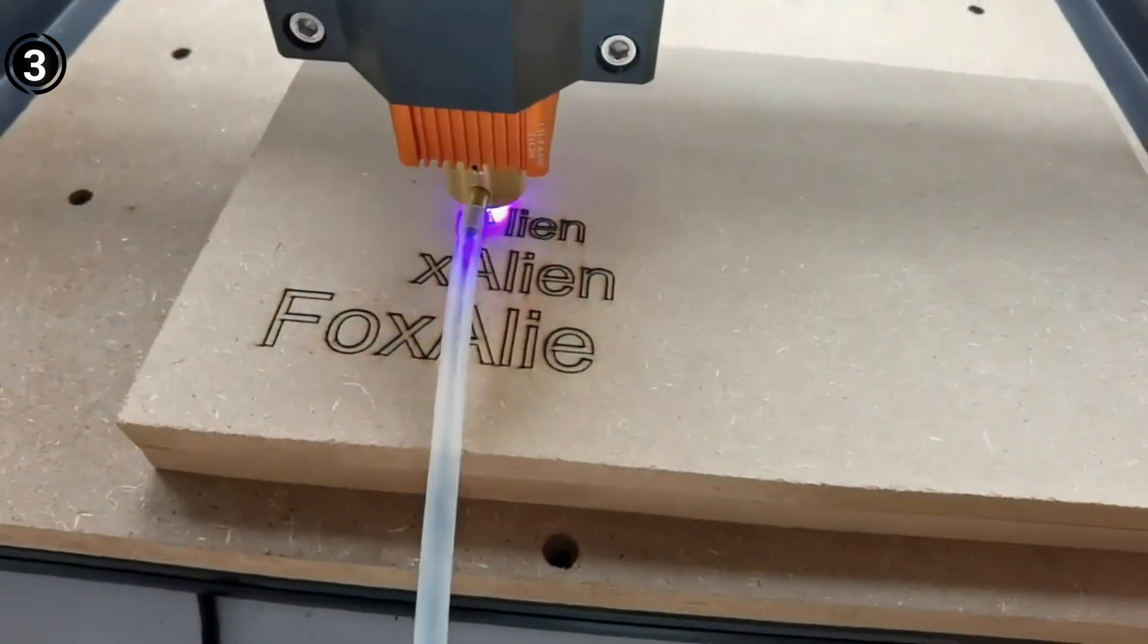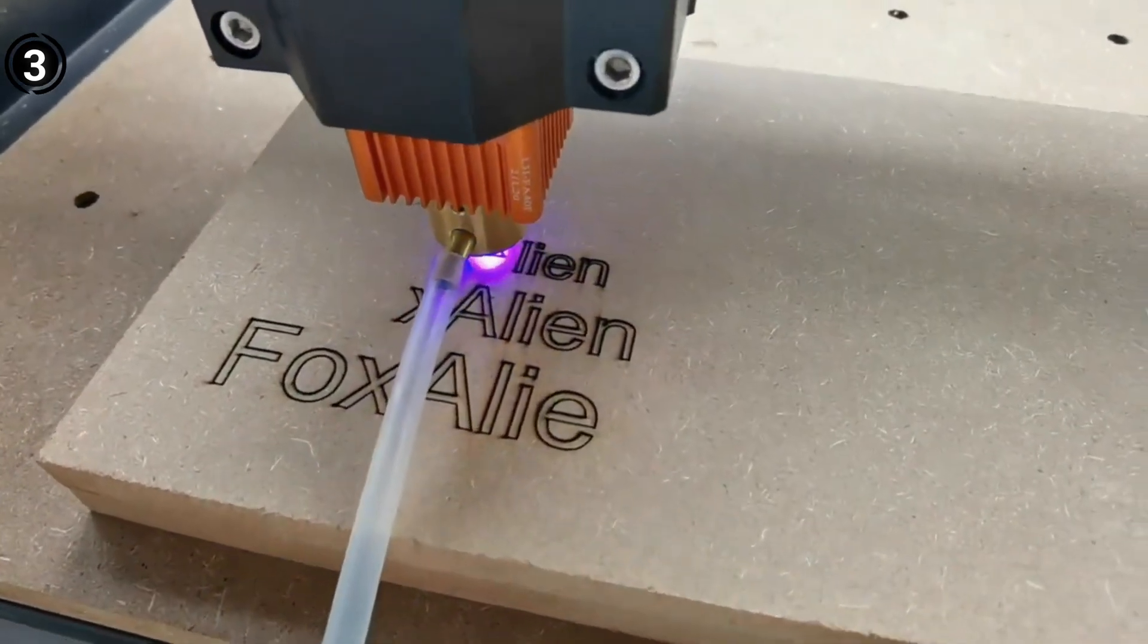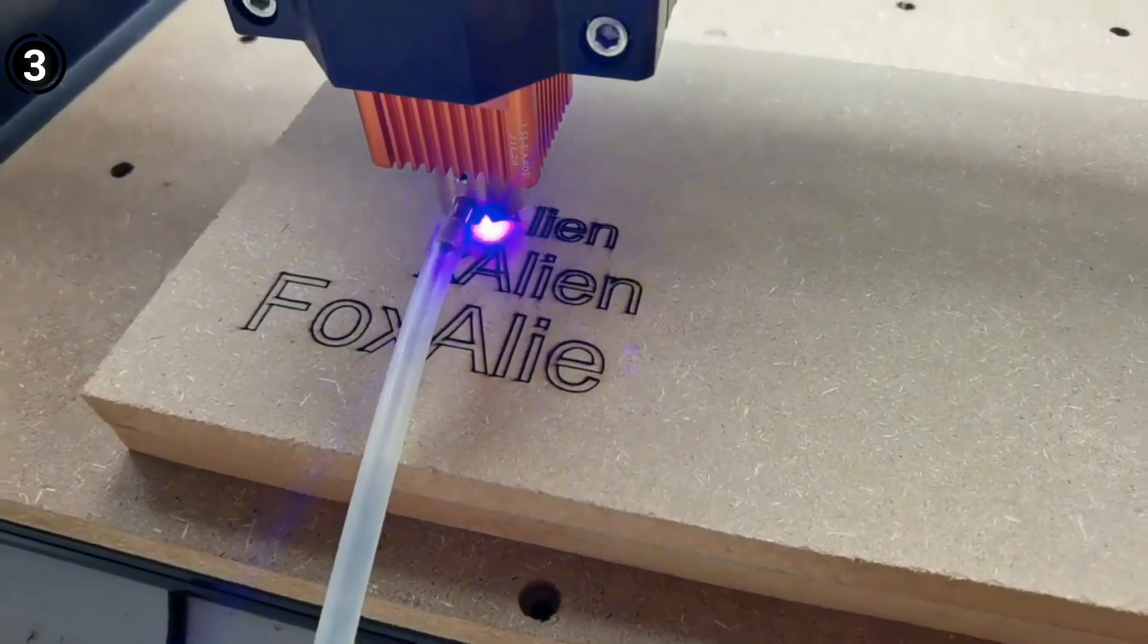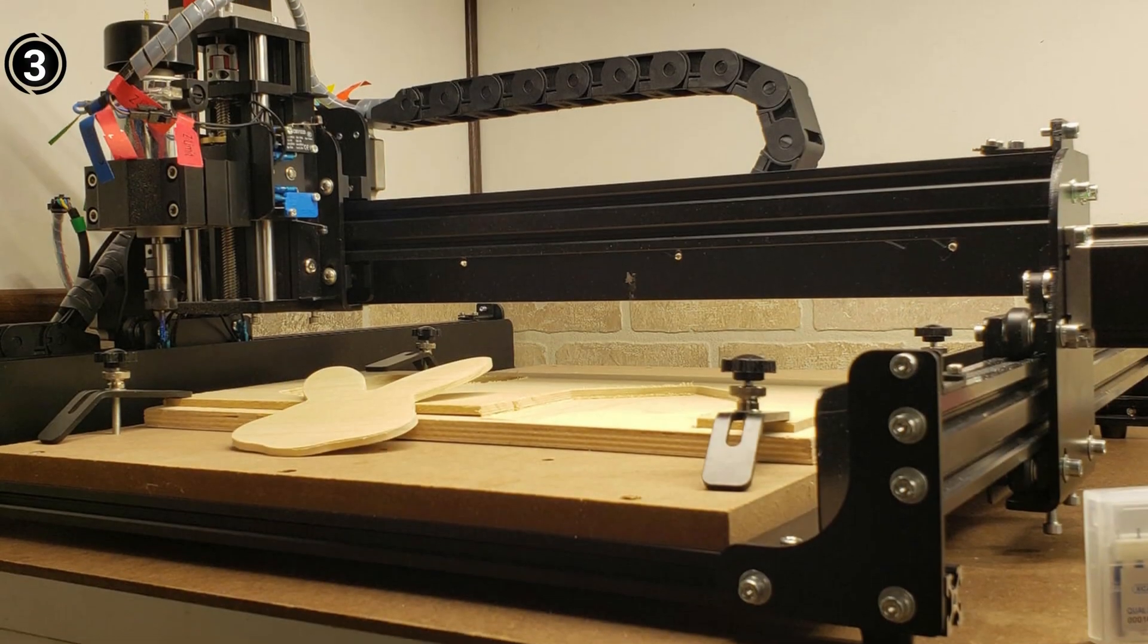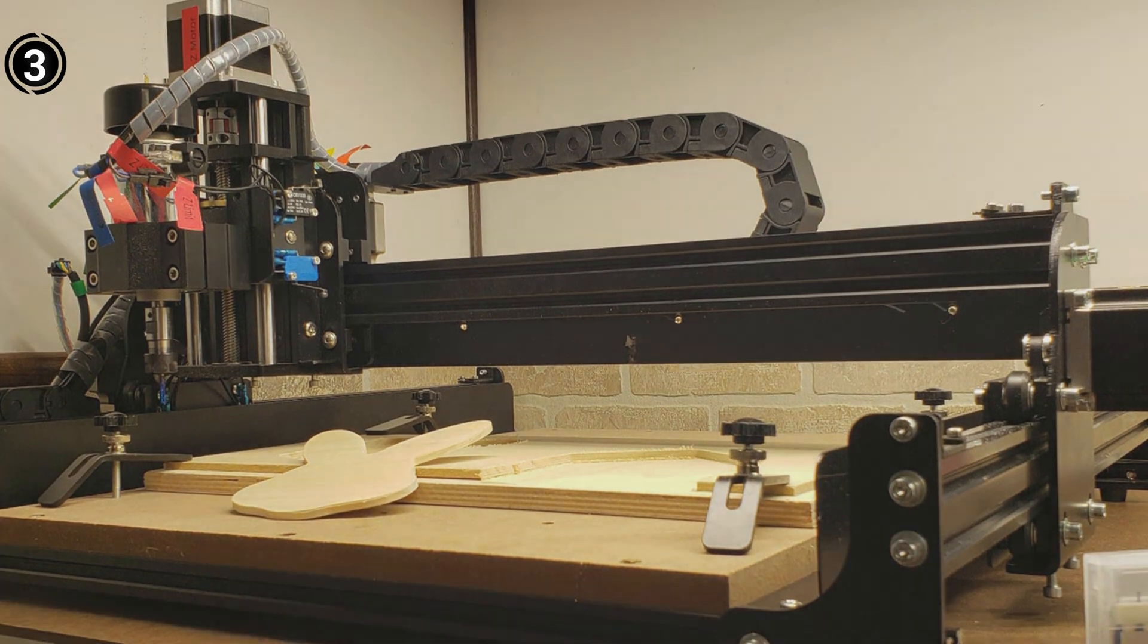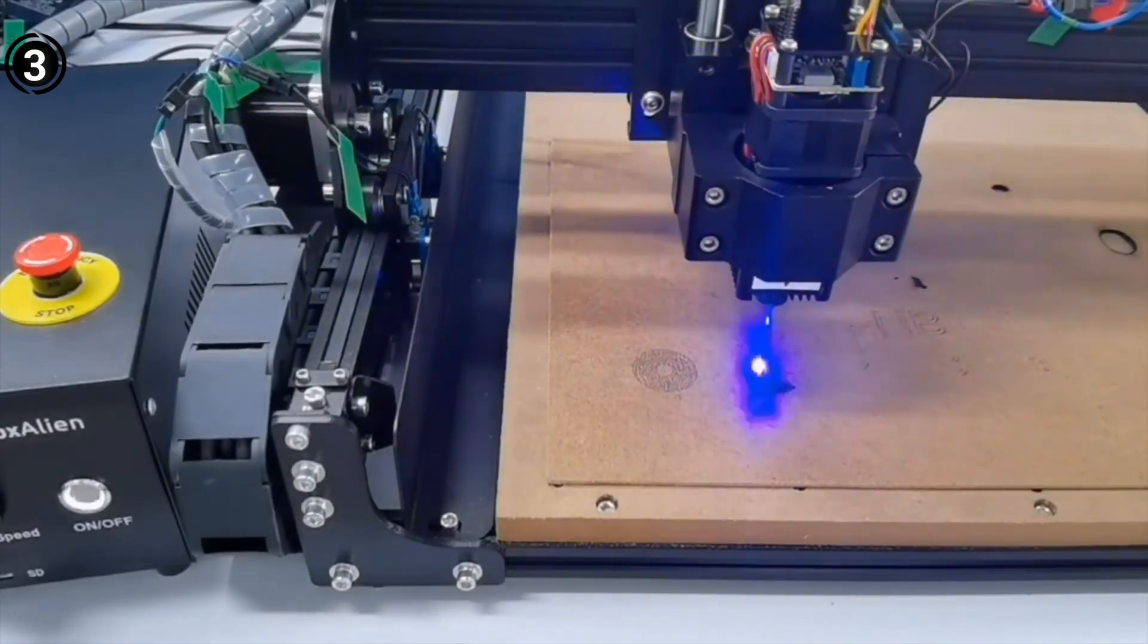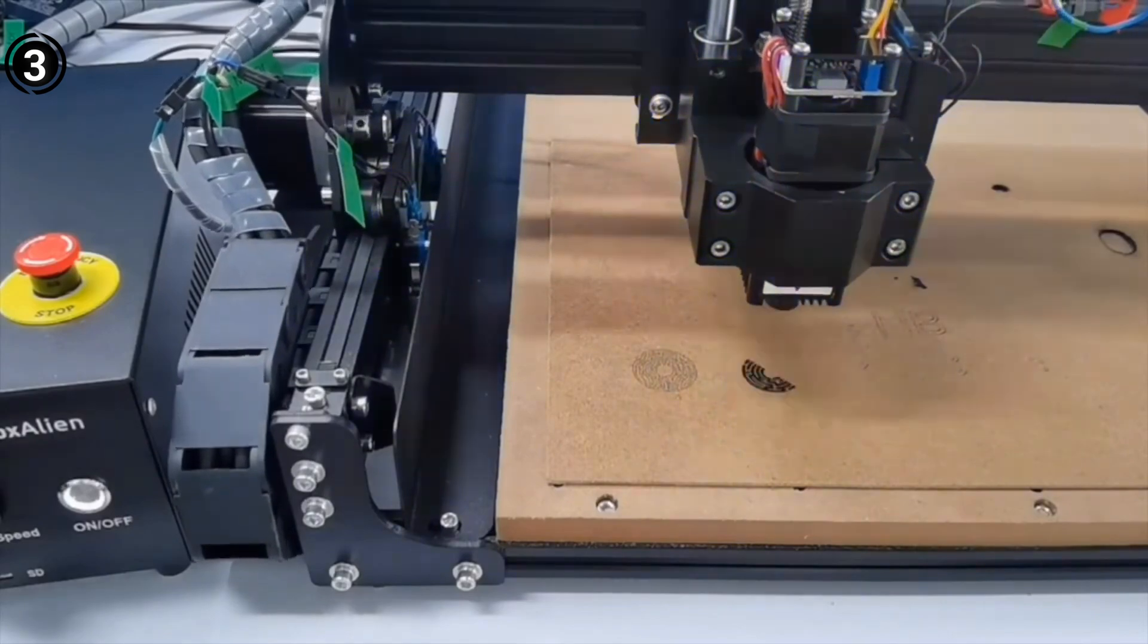Despite my limited experience, I've been able to explore a wide range of materials with this CNC router, including wood, metal, MDF, acrylic, foam, resin, nylon, fiber carbon, and PCB. This versatility has enabled me to experiment and learn at my own pace.